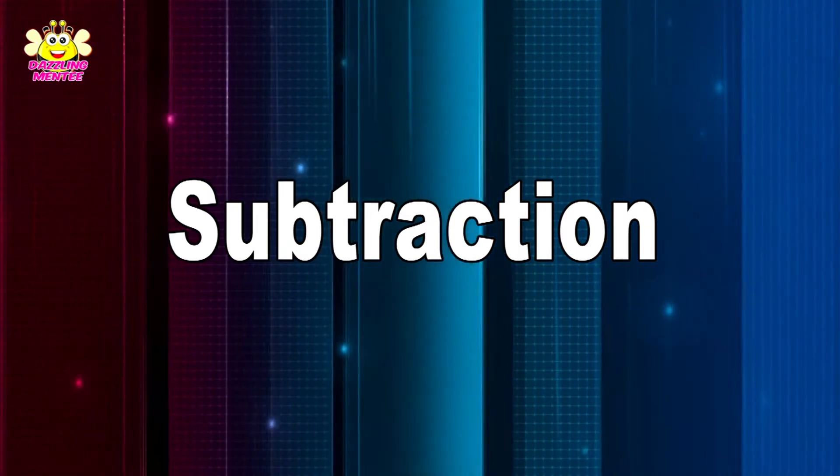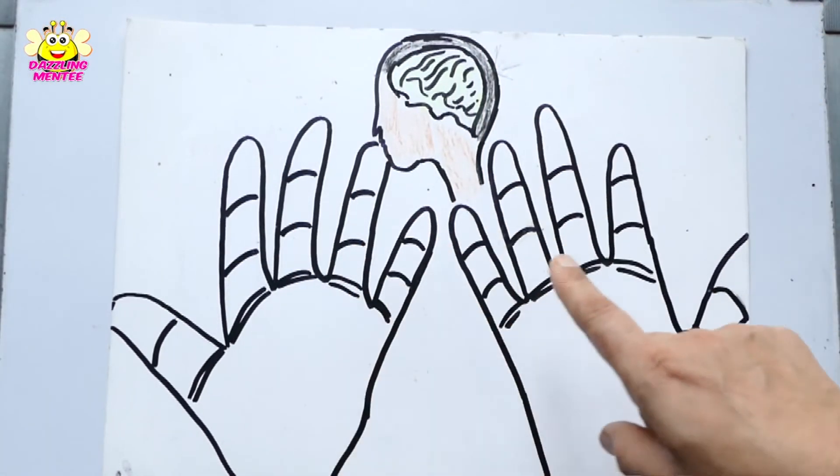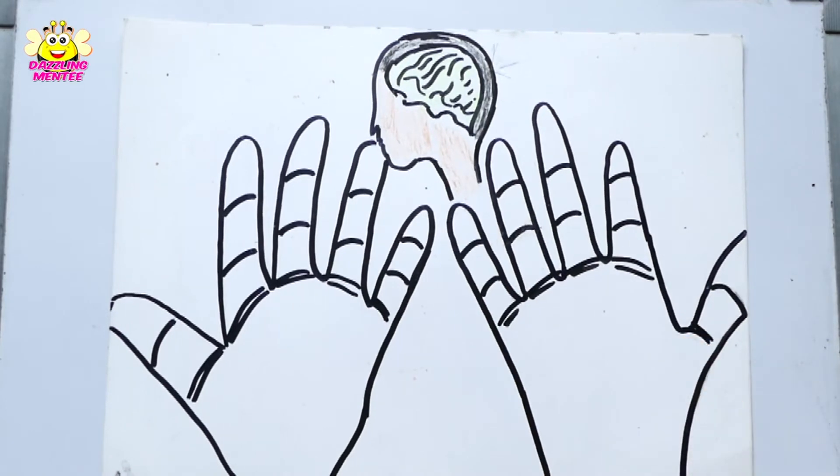Now in front of you, our brain, our mind is there with our 10 fingers, right? So what is the role of these things in our subtraction?